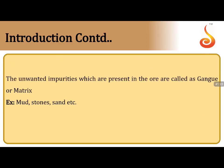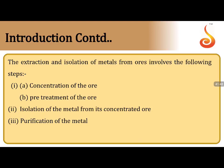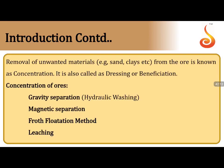Every ore is a mineral, but not every mineral can be an ore, since not every mineral gives a profitable extraction. The extraction procedure follows three steps: (1) concentration of the ore — also called pre-treatment, ore dressing, or benefaction; (2) isolation of the metal from its concentrated ore to get crude metal; (3) purification — refining of the crude metal.